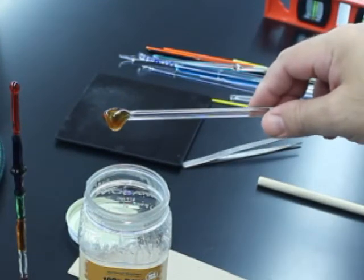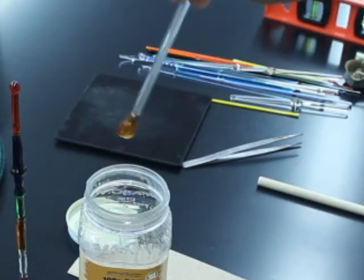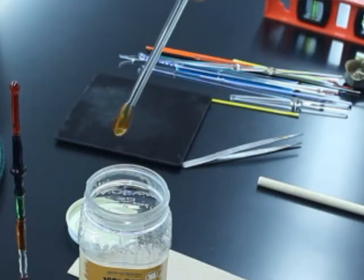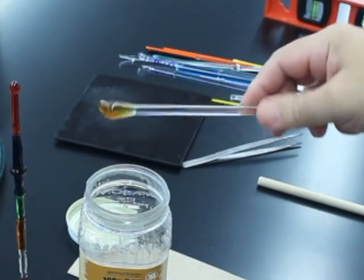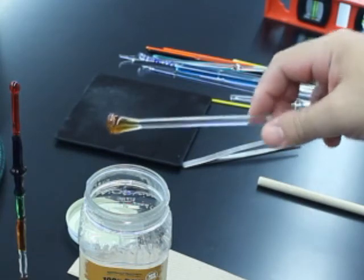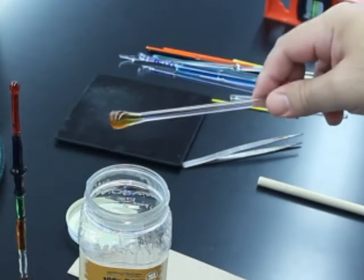So droop, droop, droop. Save it. Right. There it goes. And this is kind of a game you can play where you can basically see how far you can let the honey droop before you can recover it.